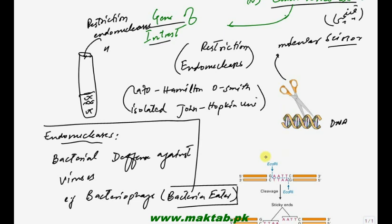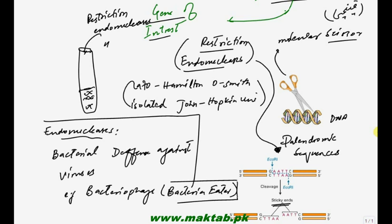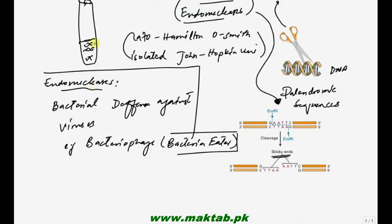Research में एक key observation था कि bacterial enzymes - restriction endonucleases - खास area पर act करते हैं जिसे palindromic sequences कहते हैं। ये वो sequences हैं जहाँ nucleotides reverse order में पढ़े जाते हैं - जैसे AATT और TTAA। जब यह enzymes act करते हैं तो ends पर sticky ends मिलते हैं - इन्हें sticky ends इसलिए कहते हैं क्योंकि यहाँ पर अपना gene of interest जोड़ सकते हो।